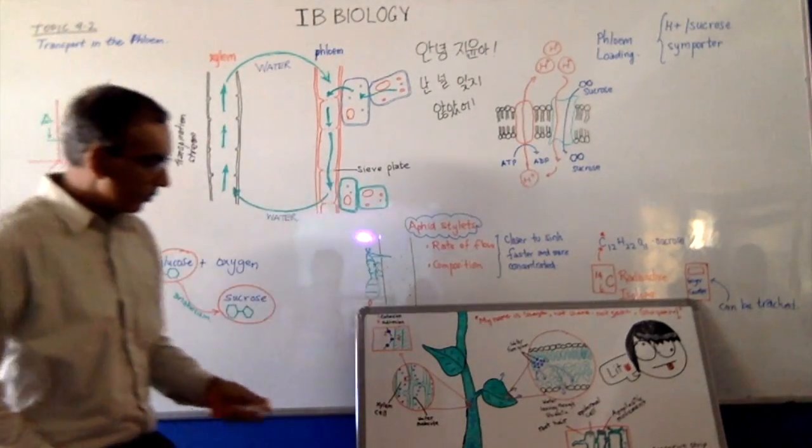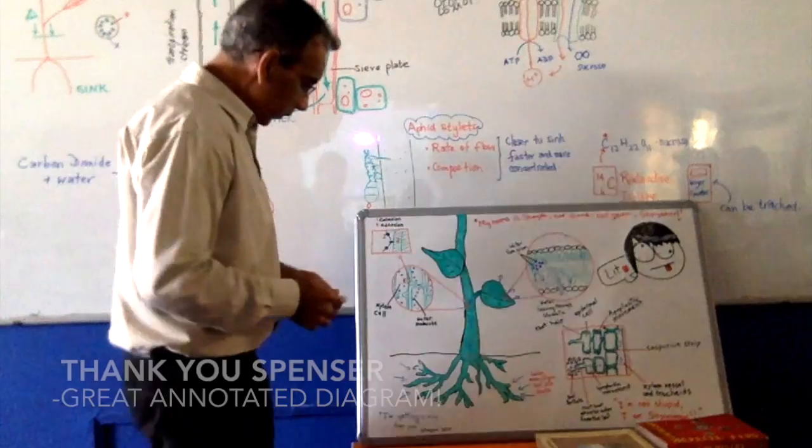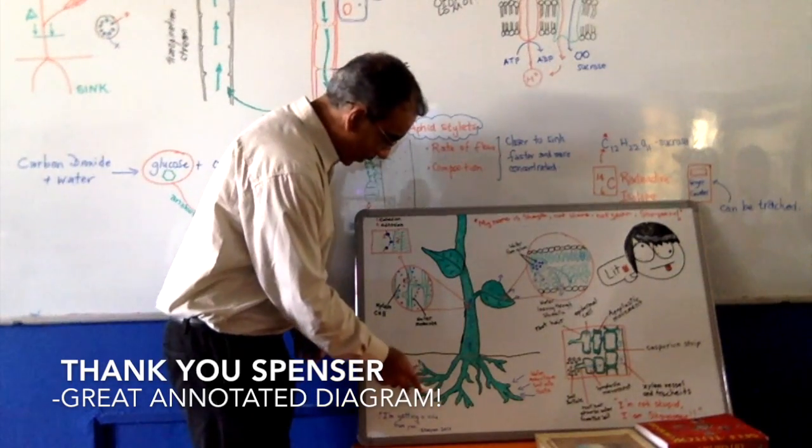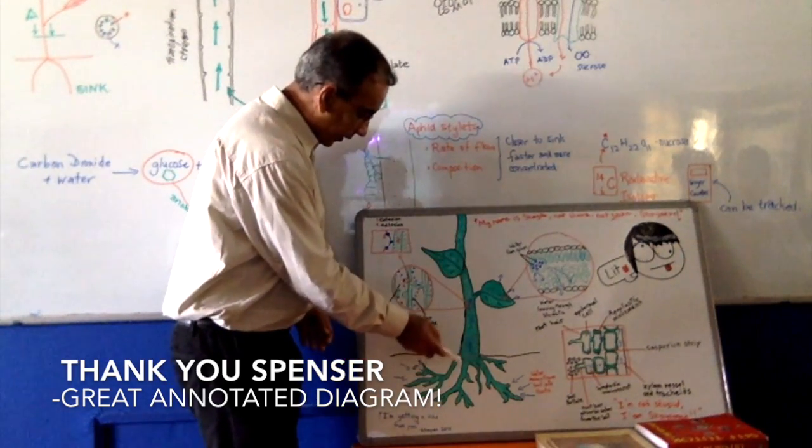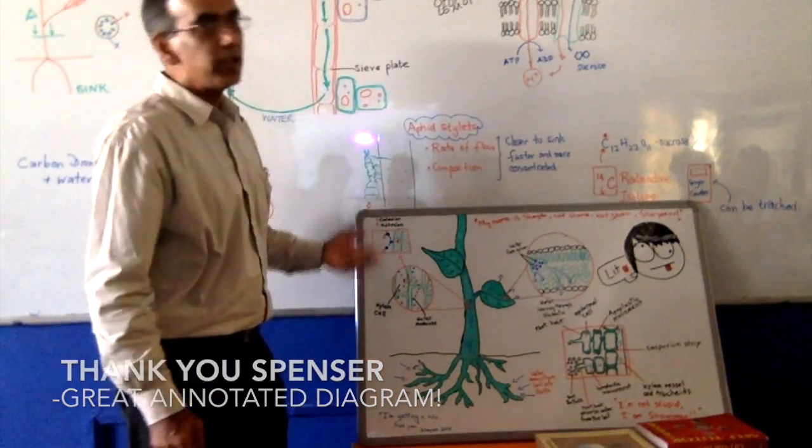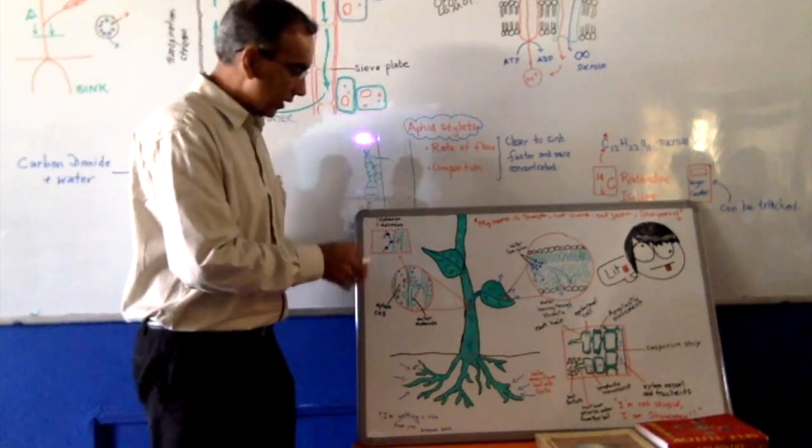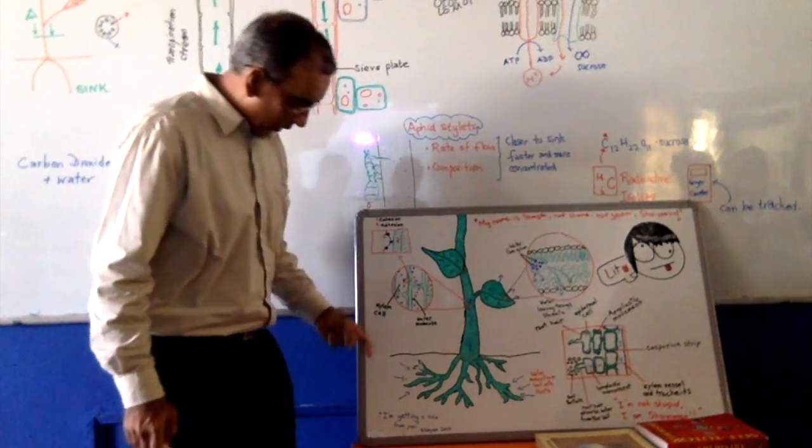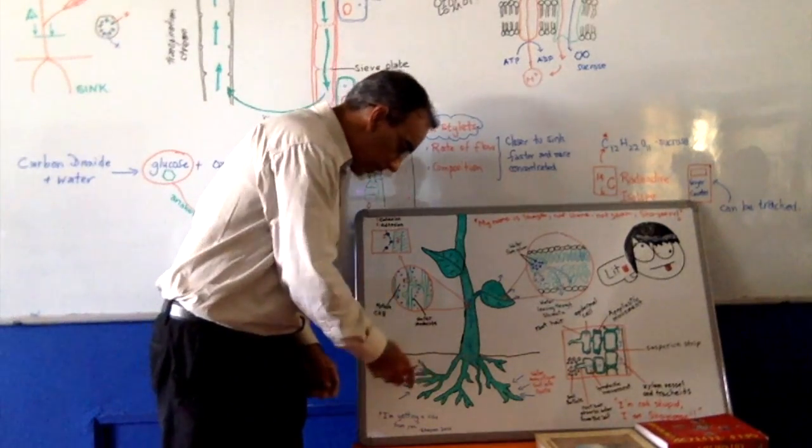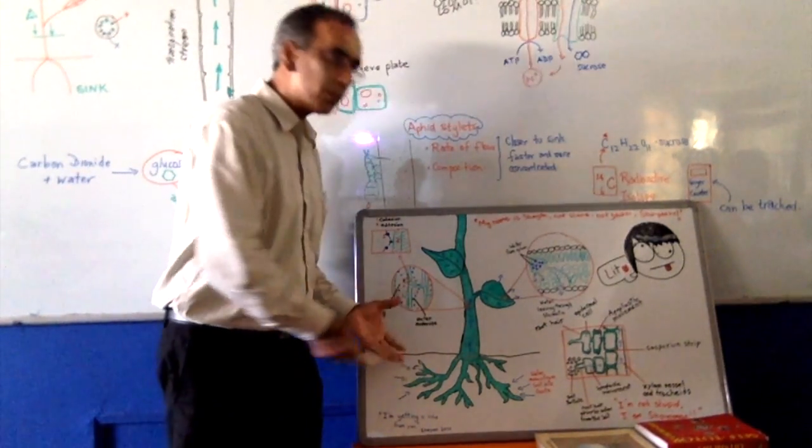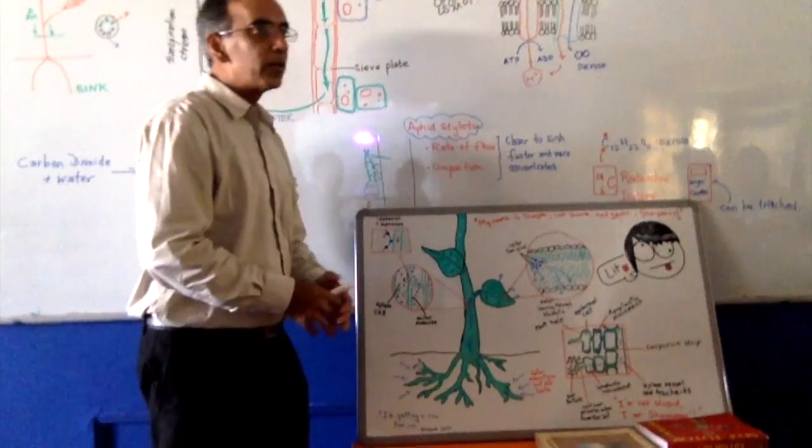Last time we were looking at topic 9.1 and we looked at how water comes up from the soil through the xylem using cohesion, adhesion, and capillarity. We also considered how fungi work in a symbiotic relationship to help roots have a greater reach for mineral ions.